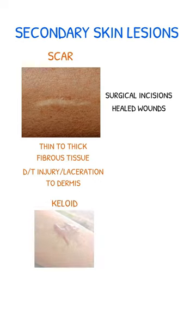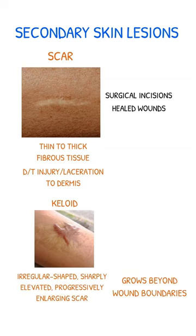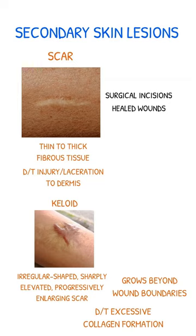A keloid is an irregular-shaped, sharply elevated, progressively enlarging scar that grows beyond the boundaries of the wound. This is caused by excessive collagen formation during the healing process. Keloids are unlike hypertrophic scars, which do not extend beyond the border of the injury. Keloid formation can occur following surgery.